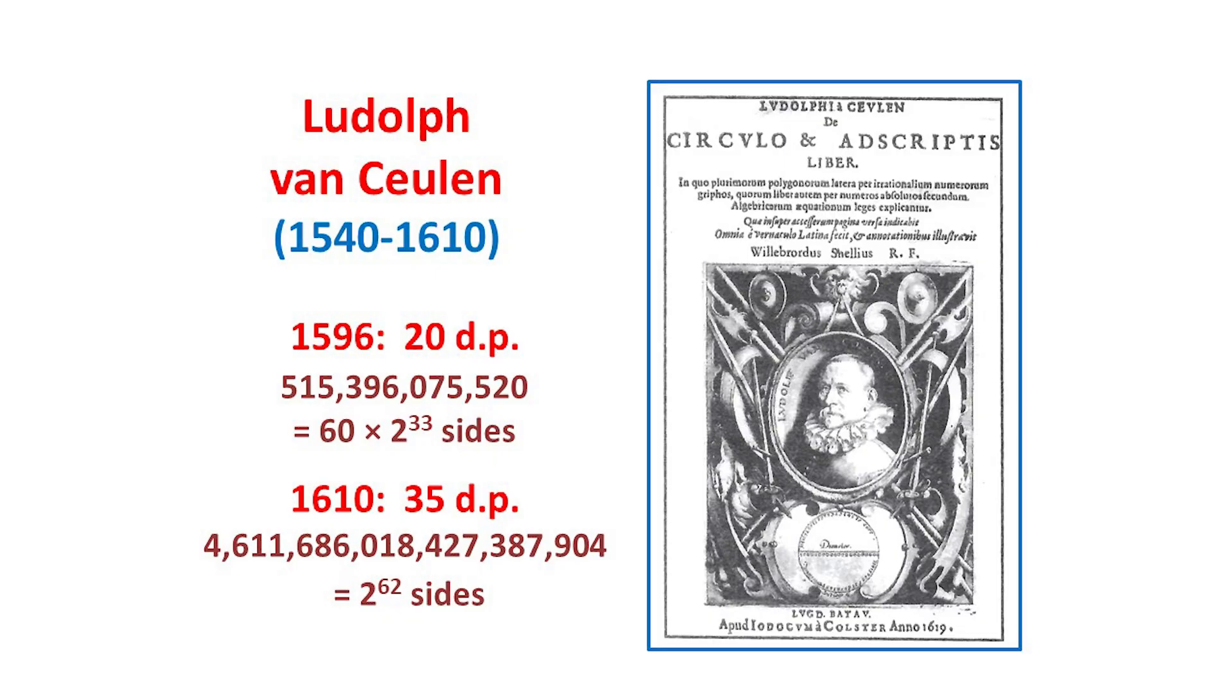Not content with this, he then increased the number of sides still further, to find pi to 35 decimal places. He asked for this latter value to appear on his tombstone in Leiden, and for many years, pi was known locally as the Ludolphian number.